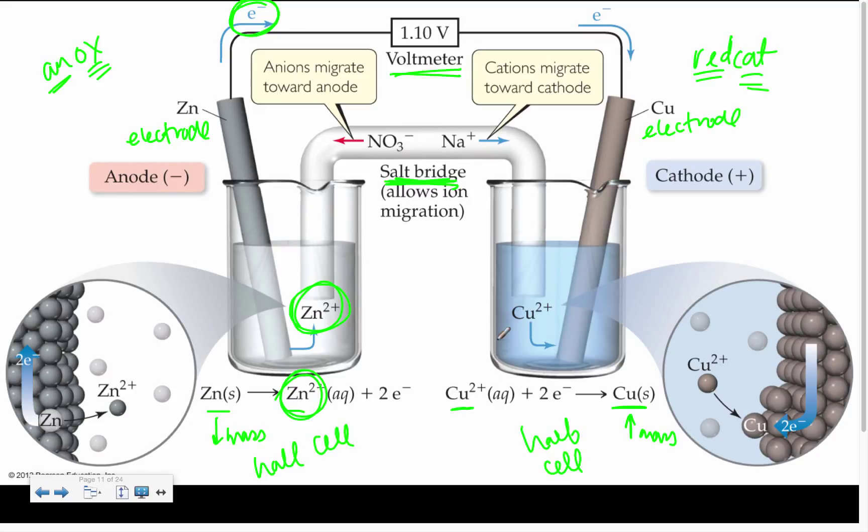Going back again, those half reactions, those things that we pull from our standard reduction potential table become the components of our half cells. Make sure you know all these parts and make sure you know all that terminology.